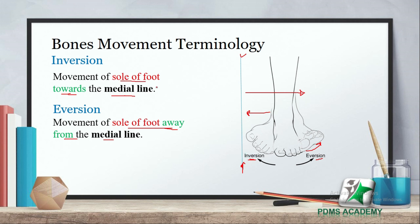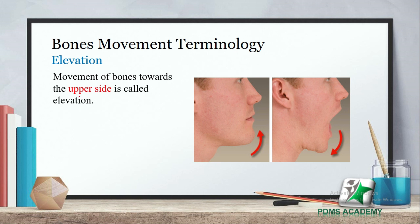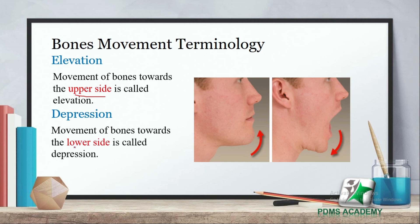Elevation: movement of bones towards the upper side is called elevation. Depression: movement of bones towards the lower side is called depression. For example، mandible کی example لیتے ہیں — اگر mandible downward move کرے تو depression، اور اگر upper side پر move کرے تو elevation۔